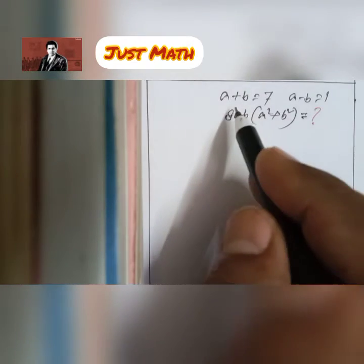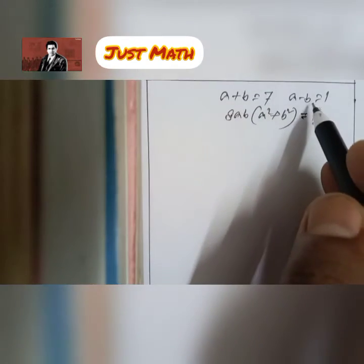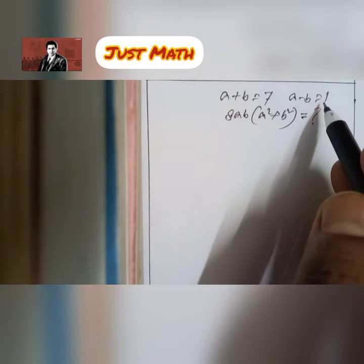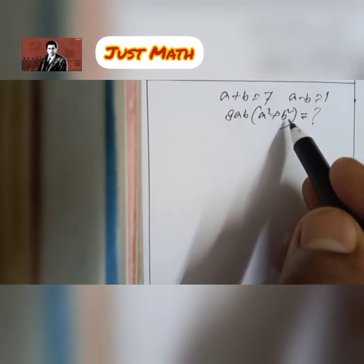Hello everyone, the problem is a plus b is 7, a minus b equals 1. What is the value of 8ab into a square plus b square?